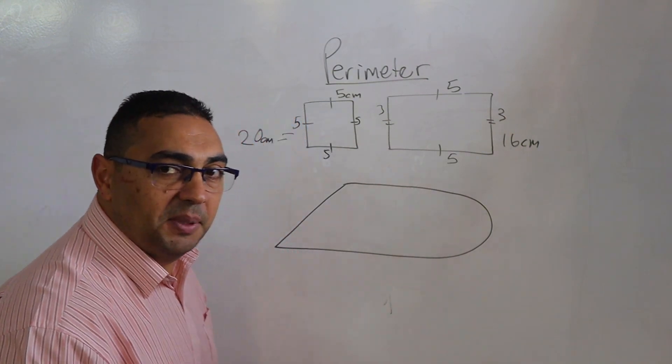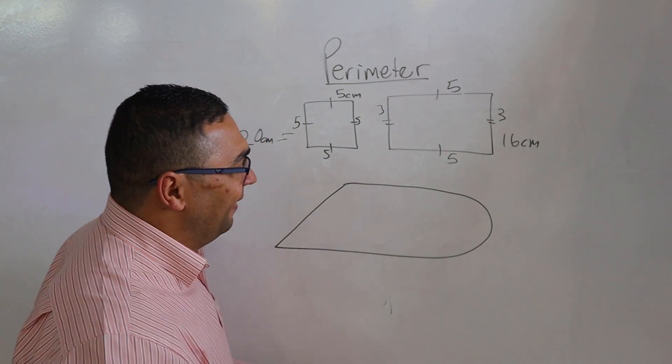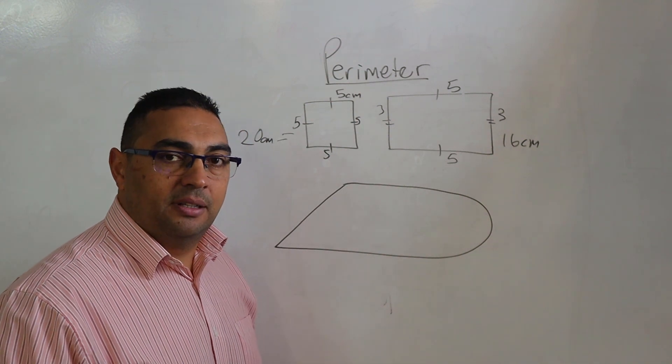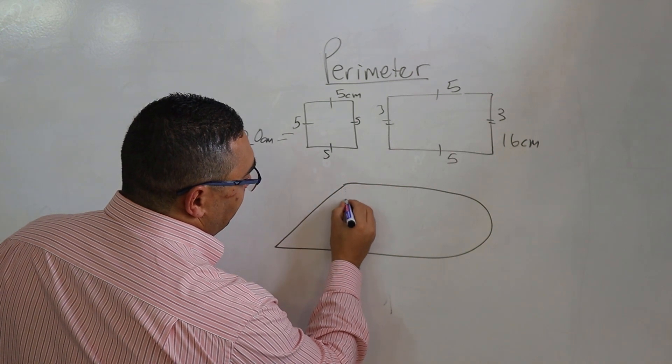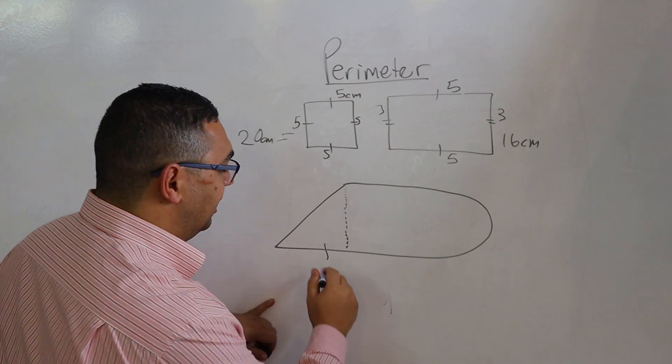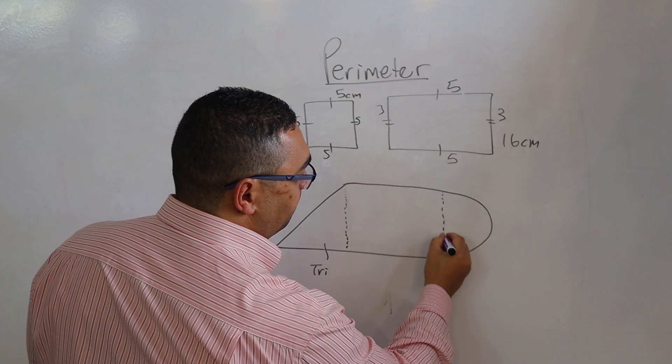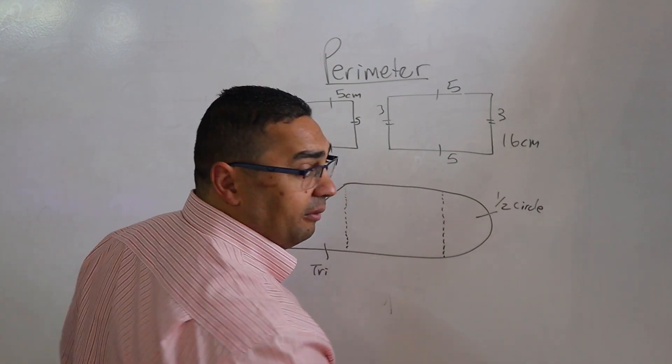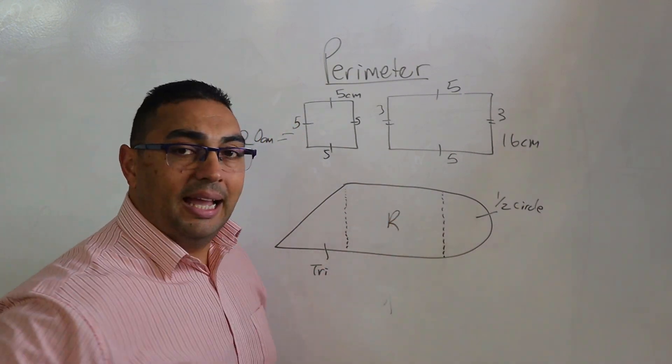But what happens, especially grade 11s, when you end up with a shape like this? Again, forgive my drawing. When we look at this, there are actually a number of shapes that are in this shape. Let's look. If I chop this through here, what do I end up with on this side? I end up with a triangle. If I do the same over here, I'm left with a semicircle, basically half a circle. And then in the middle, what am I left with? A rectangle.